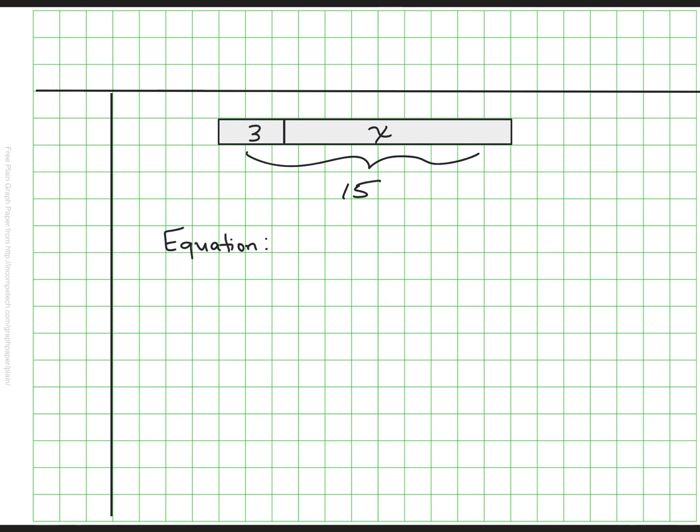All right. So I have a tape diagram with a three and X and a total of 15. And I want to think about an equation or some equations I could write to represent this tape diagram. Take a moment and decide what you see and how you might write that as an equation. The first thing that comes to mind for me is that I could take 3, add my mystery number and know that that's a total of 15. But some of you might have written it the other way. Maybe you saw that our mystery number plus three equaled 15.